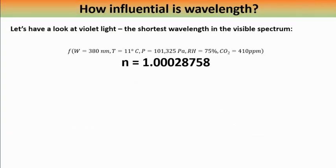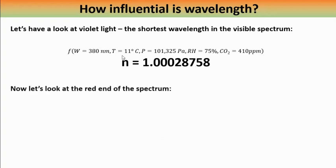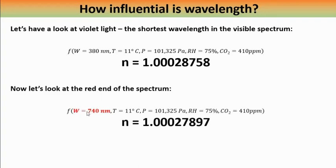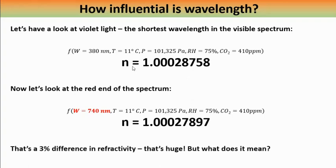Now let's look at how influential wavelength is. For blue light at 380 nanometers, with temperature at 11 degrees, normal air pressure, 75 percent relative humidity, and normal CO2 concentration, we get one index of refraction. Comparing that to red light at 740 nanometers with all other parameters the same, we get quite a different value. Looking at the refractivity — which is the index of refraction minus one — those numbers are actually three percent different, which is huge. But what does it mean for the curving of light around the Earth's surface?